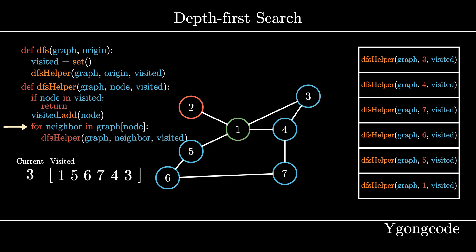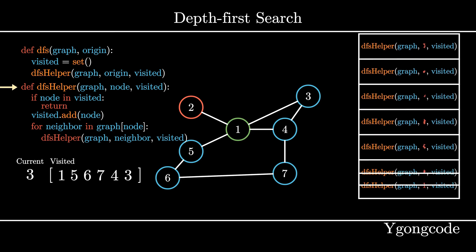At this point, since node 3's neighbors 1 and 4 are already visited, you should have a good idea on what is going to happen next.